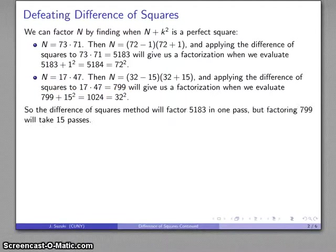And so the thing to notice here is that if I apply this difference of squares method, I get a factorization of 5183 after trying just one perfect square add. On the other hand, for 799, I have to add 1 squared, 2 squared, 3 squared, and so on, all the way up to 15 squared. I have to run this through 15 times. And so 799 is significantly harder to factor this way than 5183.